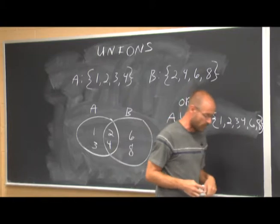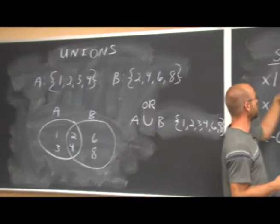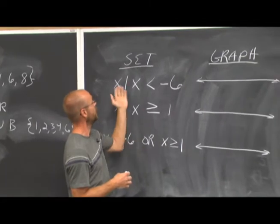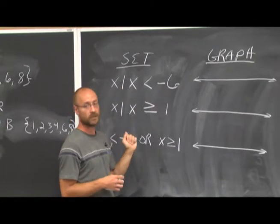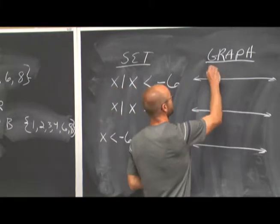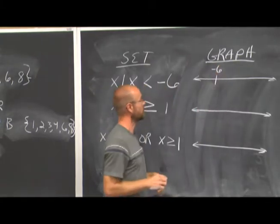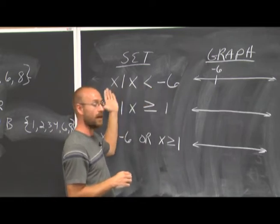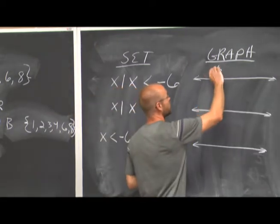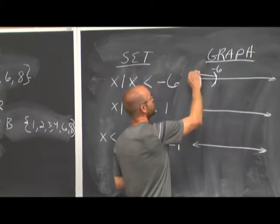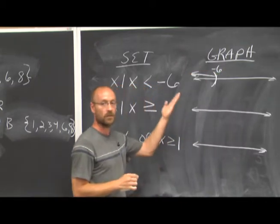We just want to know what's in one or the other. And that's why we call the union the or statement. Now we're going to look at a few examples. The first one is set notation, which we discussed in the previous video, x such that x is less than negative 6. Let's go ahead and graph that and see what it looks like on a number line.